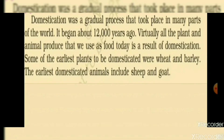Domestication was a gradual process that took place in many parts of the world. It began about 12,000 years ago. Virtually all the plants and animals we use as food today are the result of domestication. From that process, we developed farming and food production.